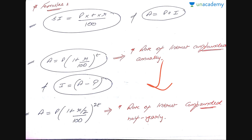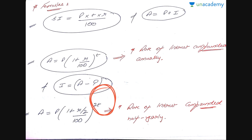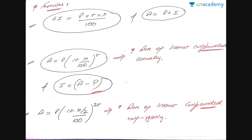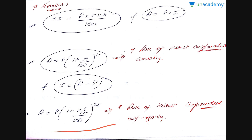There are cases where the rate of interest is not compounded annually — it may be compounded semi-annually or quarterly. For example, if I charge 10% interest compounded semi-annually, that means the rate is halved and the time period is doubled, because one year becomes two half-years. So the formula becomes: A = P × (1 + R/2 / 100)^(2T). We'll discuss this further when we solve questions in the next video.